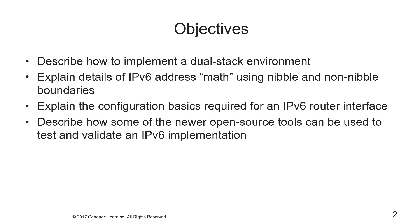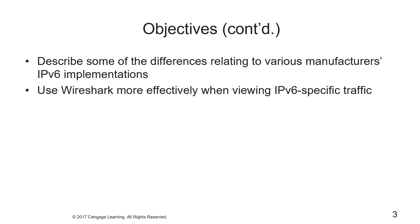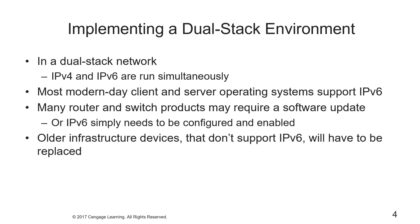This week we're going to talk about how to implement a dual stack environment, discuss the details of IPv6 math using nibbles and non-nibble boundaries, talk about some of the basics of configuration required for a v6 router interface, how some of the newer open source tools can be used to test and validate implementations, describe differences in various manufacturers' v6 implementations, and point out examples of using Wireshark to view IPv6 specific traffic.